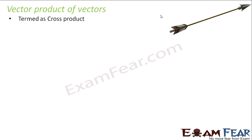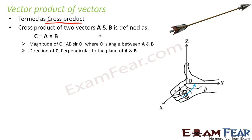So how do we define vector product? If you have two vectors a and b, the vector product is also known as the cross product of two vectors. It is defined as c = a cross b. This a cross b means that the magnitude of the product will be ab sinθ, where θ is the angle between a and b.